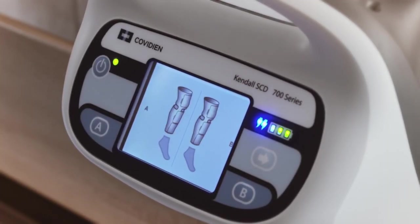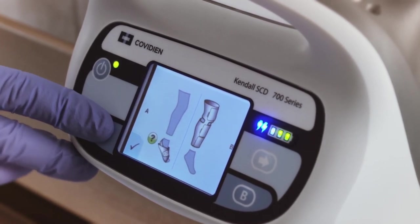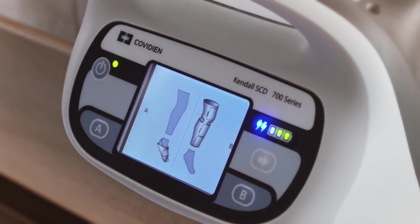the port A and port B leg images will blink to indicate the default garment configuration, which is leg compression. Pressing the A and/or B buttons will cause the corresponding port's leg image to shift to a foot image, indicating that foot compression is desired.